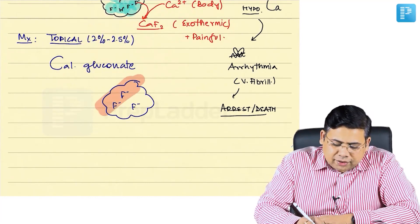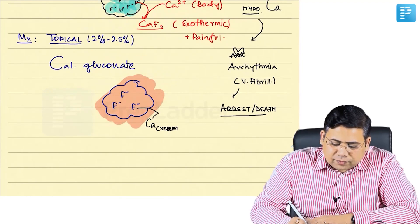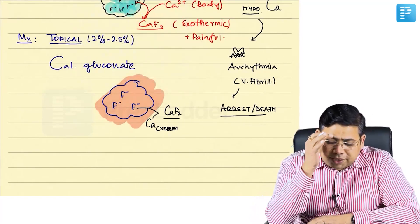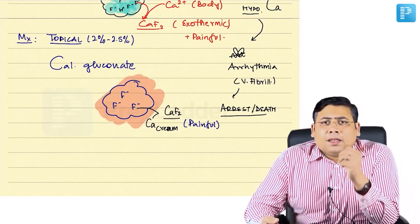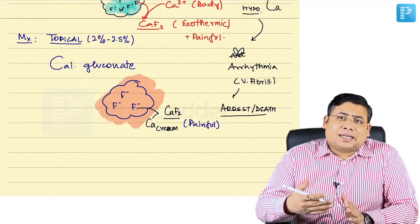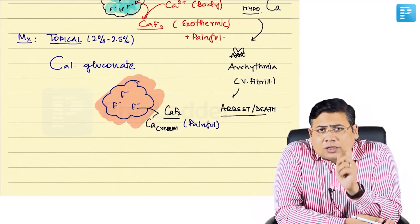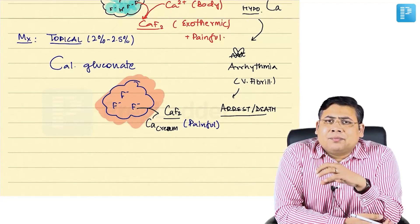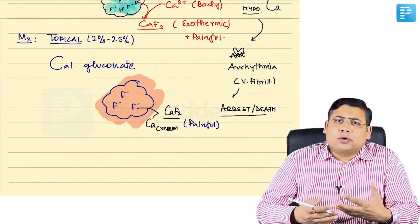When topical calcium gluconate is applied to the wound containing fluoride, the calcium from the cream combines with the fluoride, forming calcium fluoride locally. The patient experiences pain for about five to six minutes. Once the patient is comfortable and pain-free, apply again. Repeat this in cycles until the application becomes completely painless — the logic is to scavenge all topical fluoride using the topical calcium, acting as a fluoride scavenger.